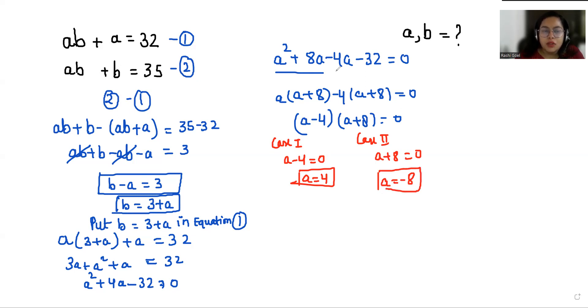Now I'm going to put the value and find out the value of B. So here B equals 3 plus A. So B equals 3 plus 4, B equals 7 for case first.